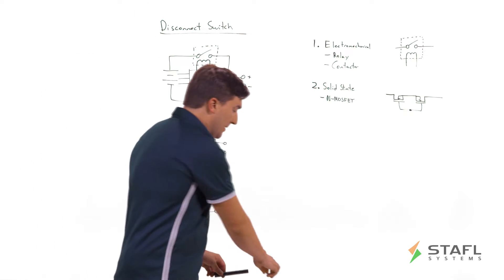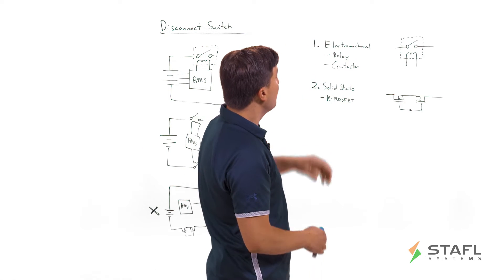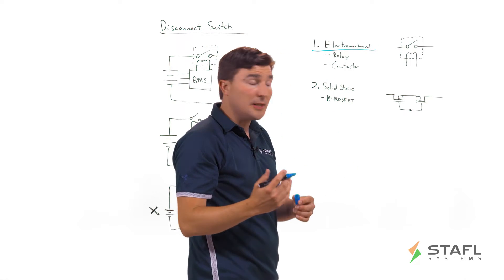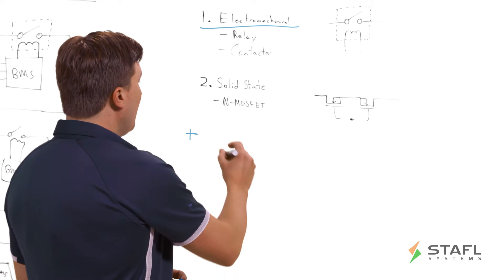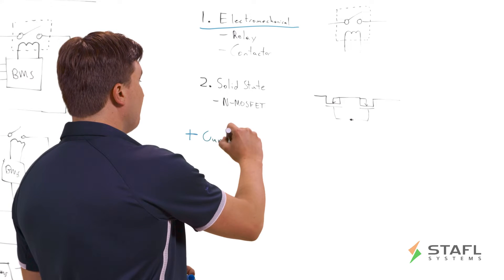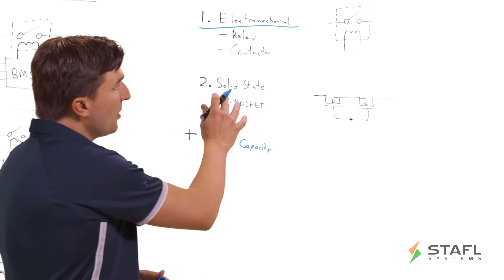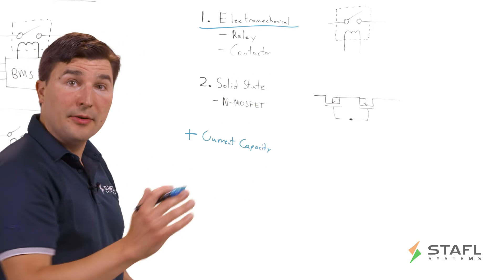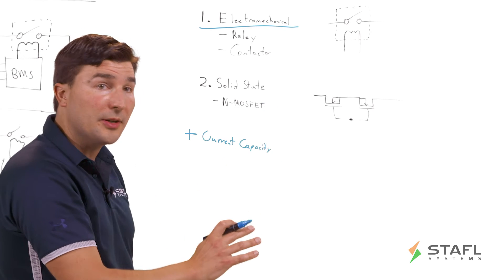Let's discuss some of the benefits and the pros and cons of each of these approaches. Starting with electromechanical, what are some of the characteristics that are beneficial? One is that you have very high current carrying capacity. For example, you could easily have a contactor that can handle 500 amps, 600 amps, even 1000 amps, whereas doing that in solid state would be very challenging.